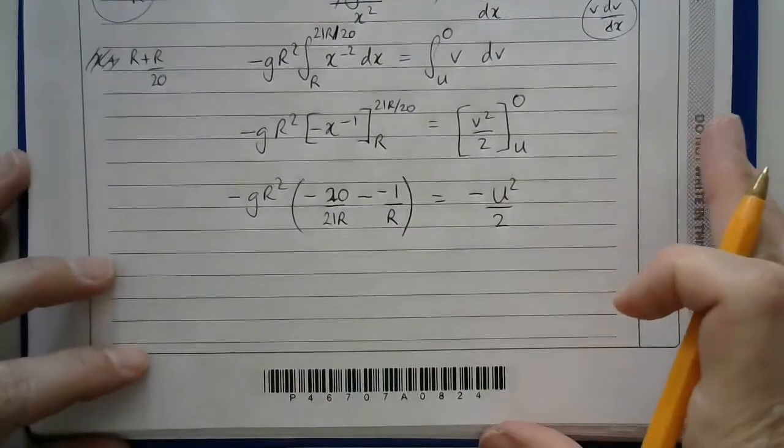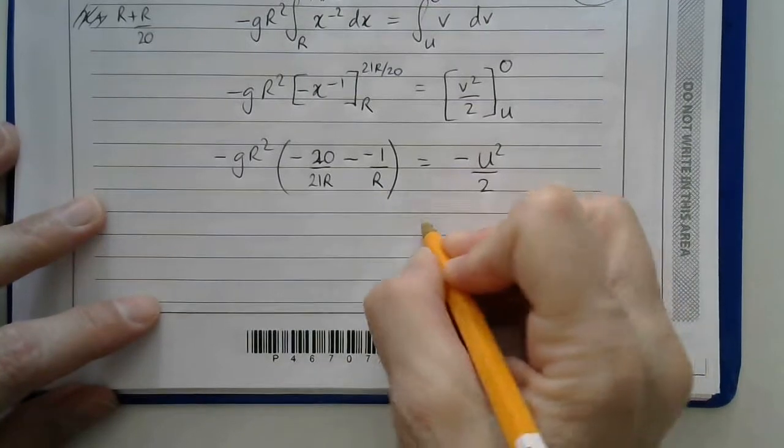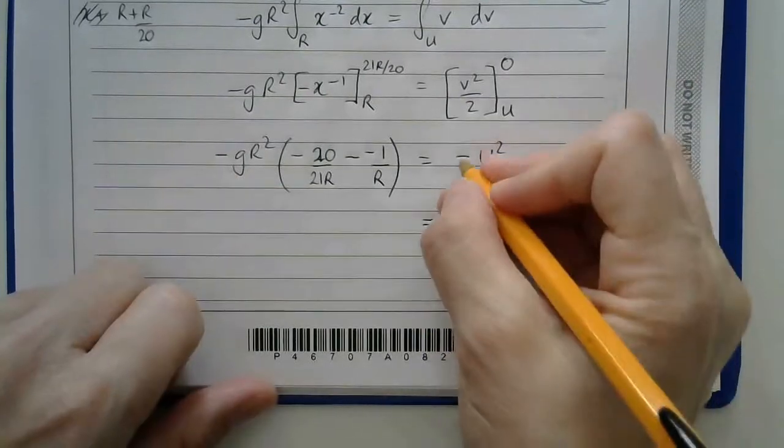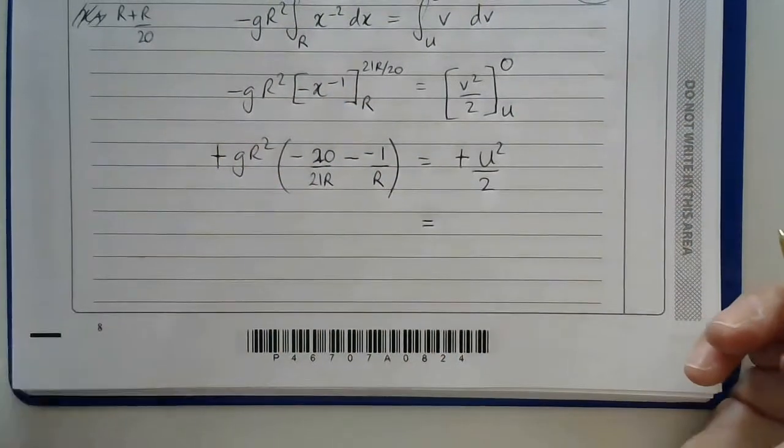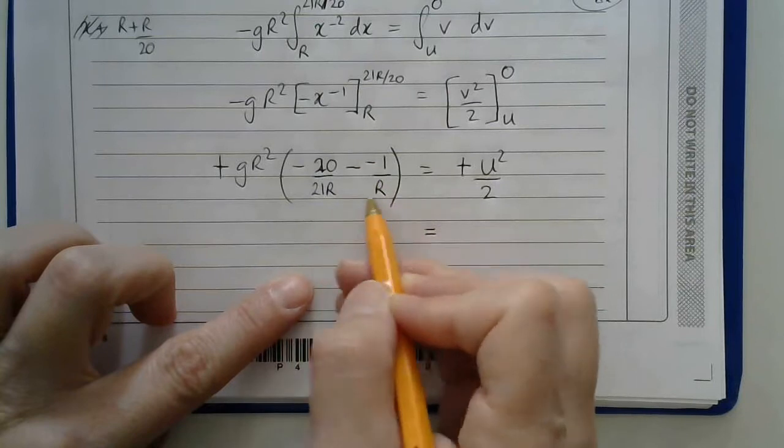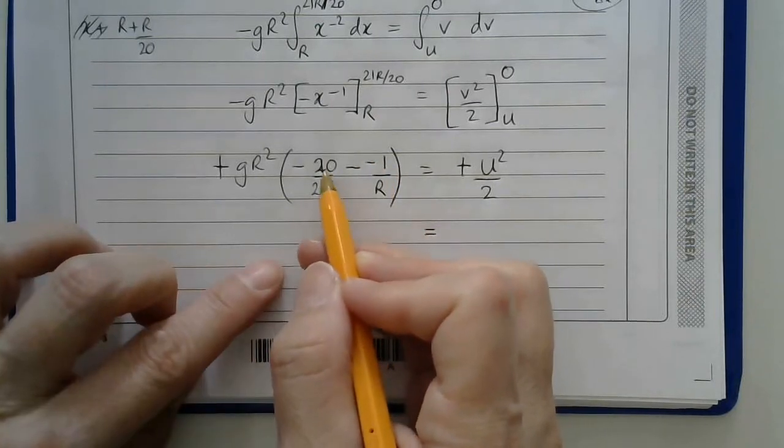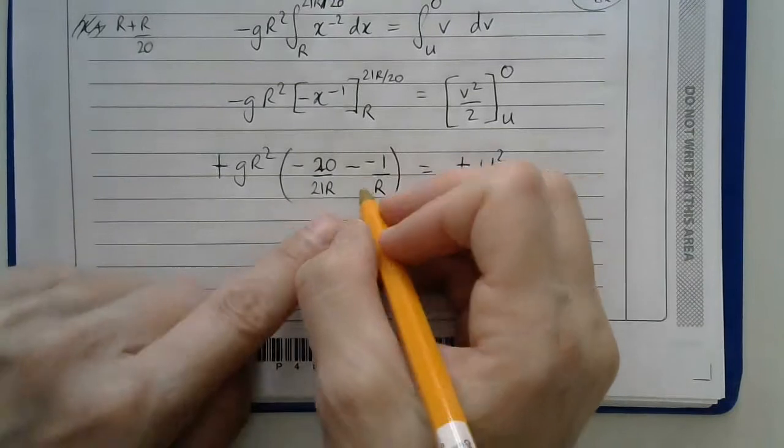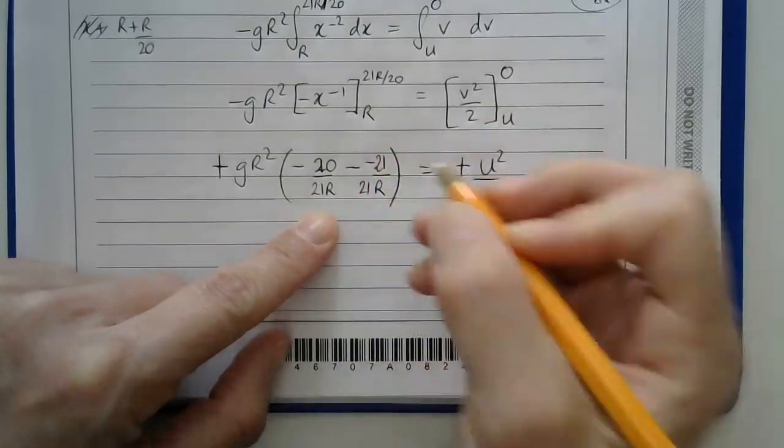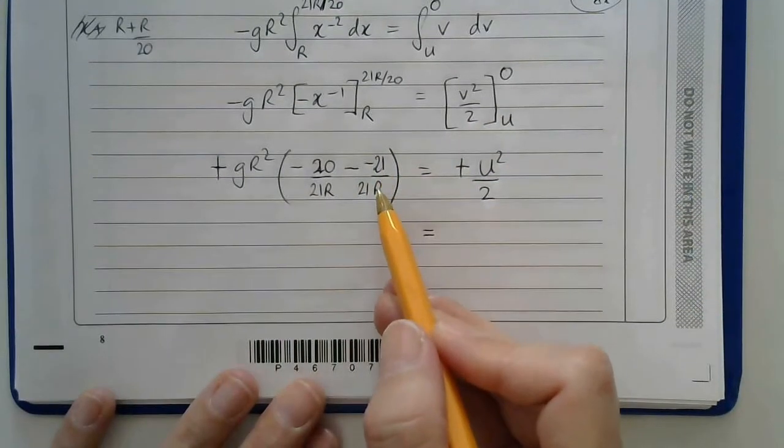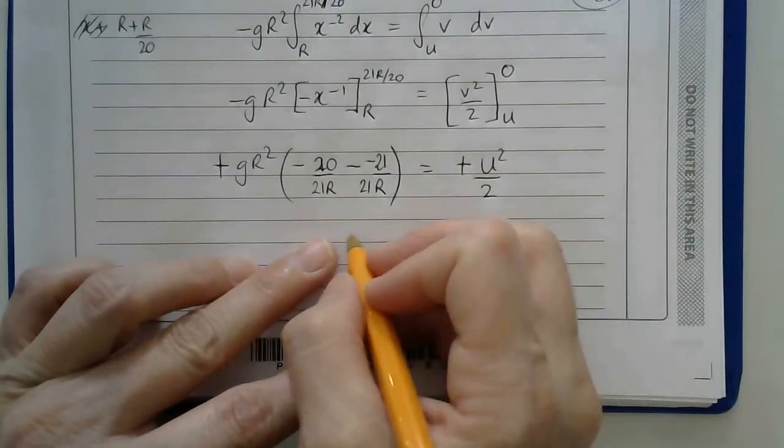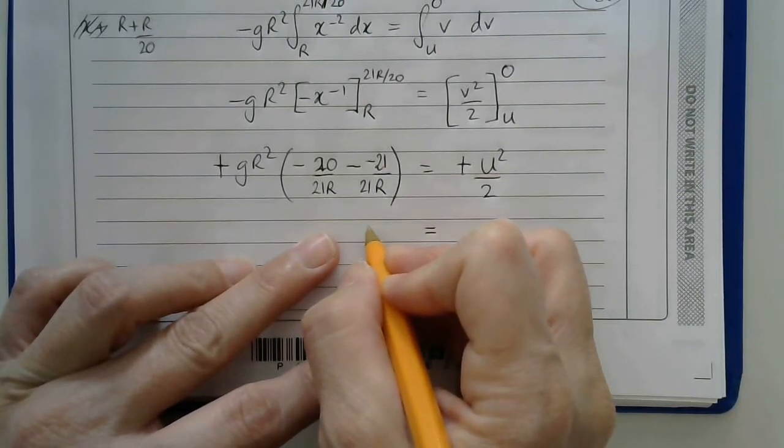Okay, so now I can work out that. I've got negatives on both sides, so I could just do that, and multiply both sides by negative 1. So here I've got 1 over r, which is positive, take away 20 over 21r. Now, if I multiply the top and bottom of this fraction by 21, that will make it a bit easier. So I've got 21 over 21r minus 20 over 21r. So that leaves me with 1 over 21r.